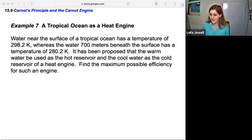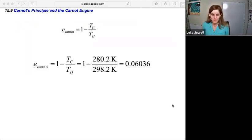All right, so let's check out the calculation. So Carnot efficiency, one minus Tc over Th, plugging those numbers in, and it comes out to 0.06036, or in other words, about 6.0 percent.